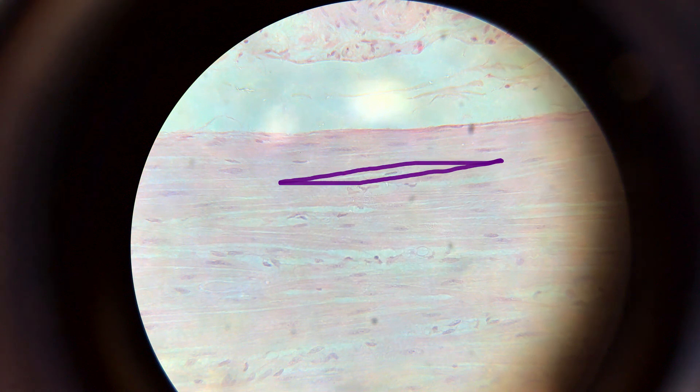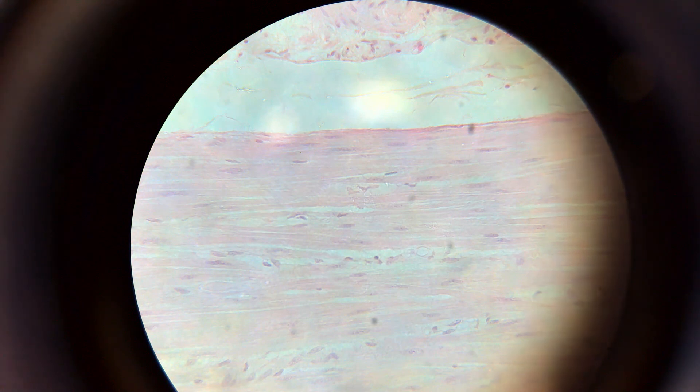Next up, we have human smooth muscle. This is from the intestines. These are spindle-shaped smooth muscle cells. They're uninucleated and involuntary, just like cardiac muscle, but they're non-striated—they don't have that banded appearance we saw in cardiac and skeletal muscle.